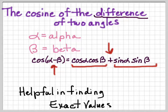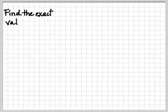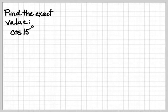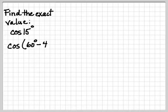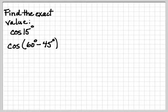This is helpful in finding exact values — exact values like for 30, 60, 90, that type of thing. So we want to find the exact value of cosine of 15 degrees. We don't know the cosine of 15 degrees unless you put it into your calculator, and we're not doing this with a calculator. So what we're going to change this to is: 15 is 60 minus 45, and we know the exact values of 60 and 45.